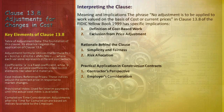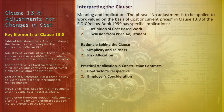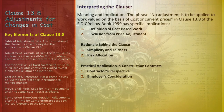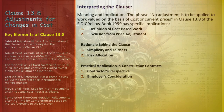A is a fixed coefficient, providing a constant base for adjustments. The variable coefficients B, C, and D are linked to fluctuating cost elements like labor and materials. This structure allows for flexibility and responsiveness to market changes.